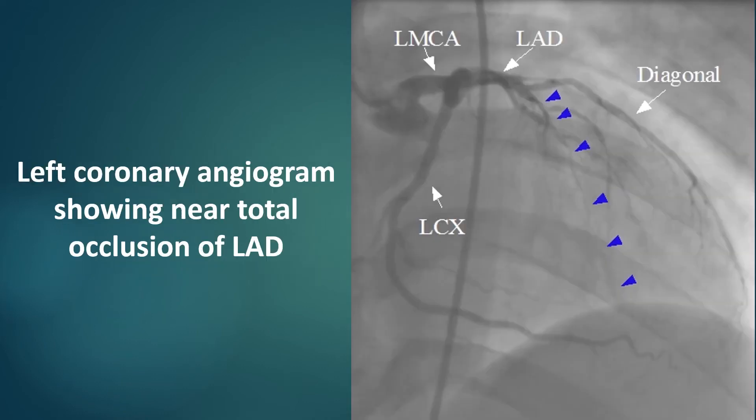Left coronary angiogram showing near total occlusion of the LAD. The region of the aneurysm is usually the territory of a poorly collateralized total or near total coronary occlusion. In this case, it is near total occlusion of the left anterior descending coronary artery beyond a major diagonal with faint antegrade flow, marked by blue arrows.